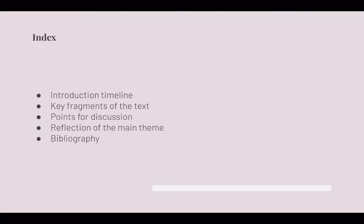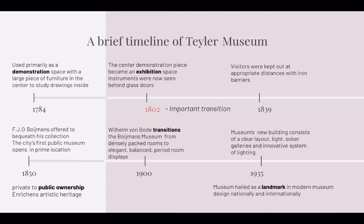Julia Nordegraaf opens her introduction with an explanation of the timeline of the museum she has chosen for her study. This information is important because it guides us to understand the arguments she presents. We gain a background understanding of the historical context and social climate of this museum as it transitioned over the years.